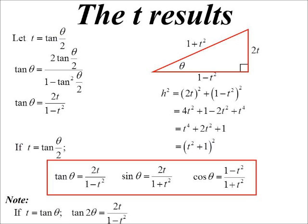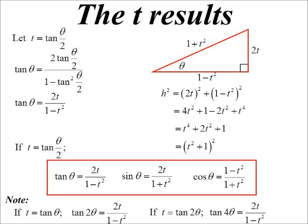Note, I can still use the T results even if tan is not theta on two. If I had T equal to tan theta, then tan two theta would become two T on one minus T squared. If T was tan two theta, then tan four theta would become two T on one minus T squared. So it's just that double angle, half angle relationship. You can use it for whatever you want.